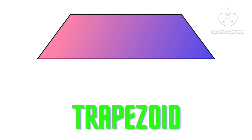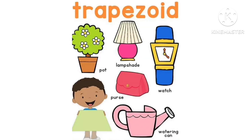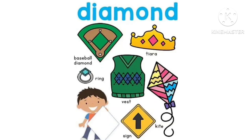Trapezoid. Trapezoid examples: tiara, ring, sky sign, four diamonds.